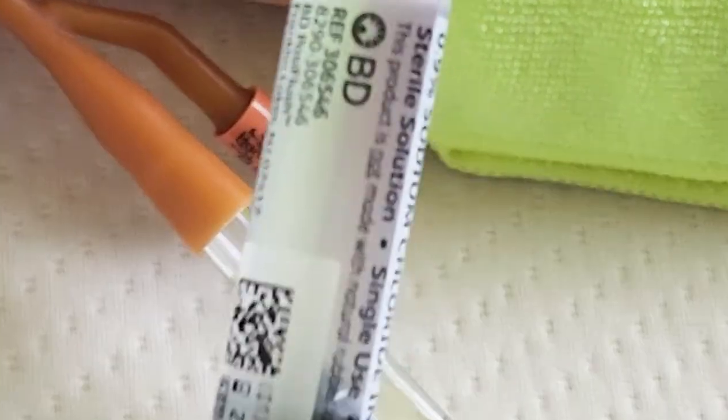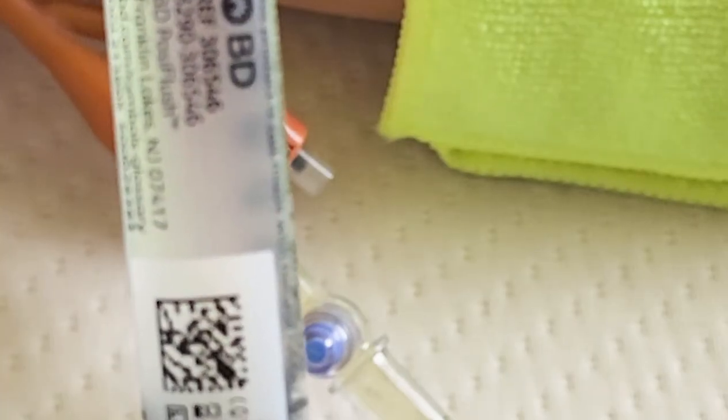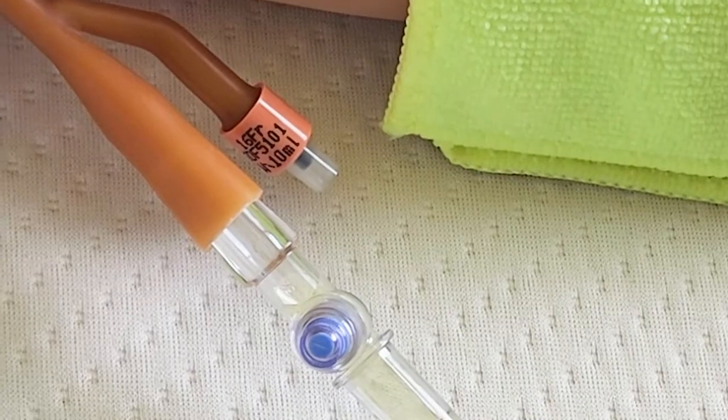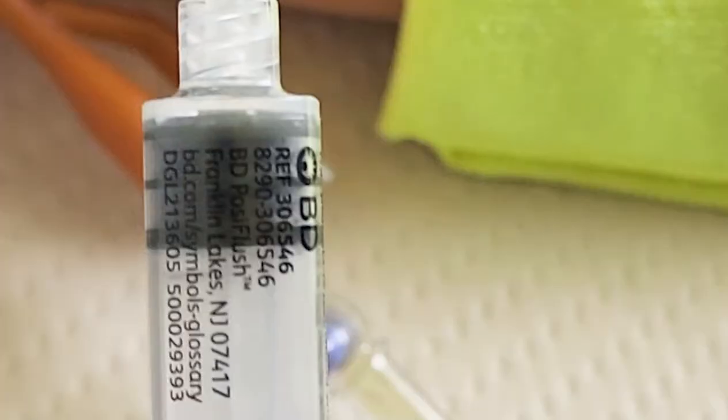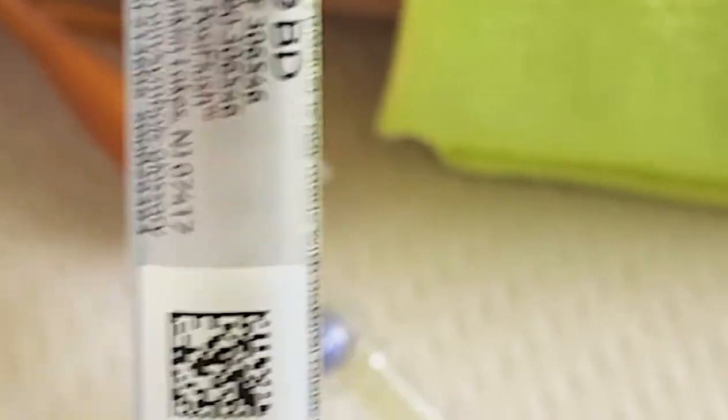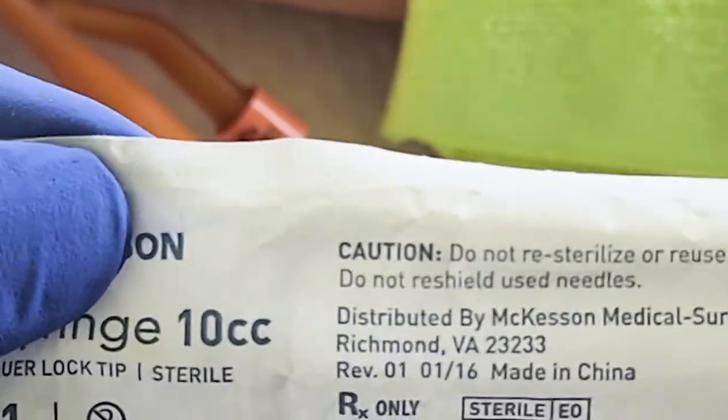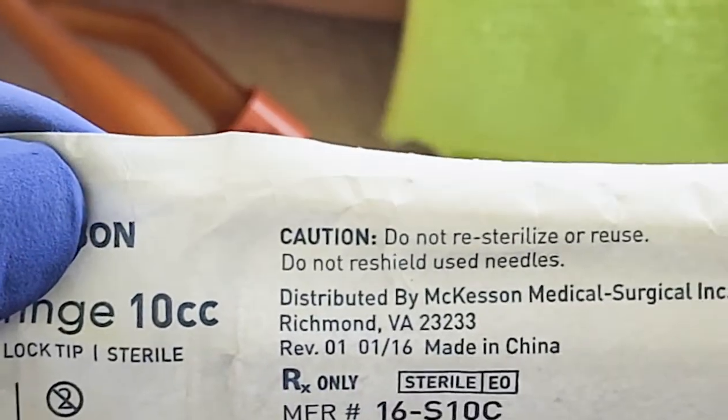Just a side note, do not use a saline flush and remove the saline to use the syringe for specimen collection. I have seen nurses remove the saline and then use this syringe for specimen collection. That is improper. You must use a sterile 10cc Lurelock syringe for specimen collection.